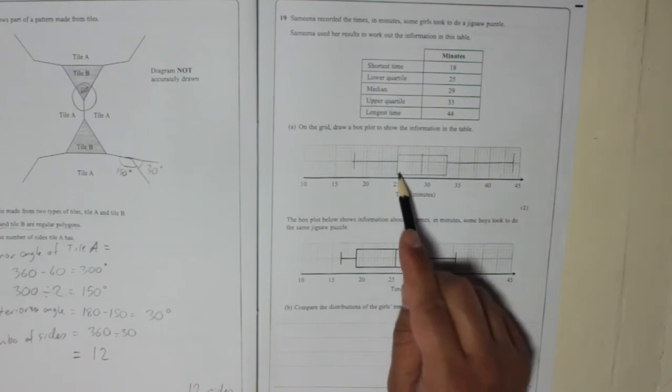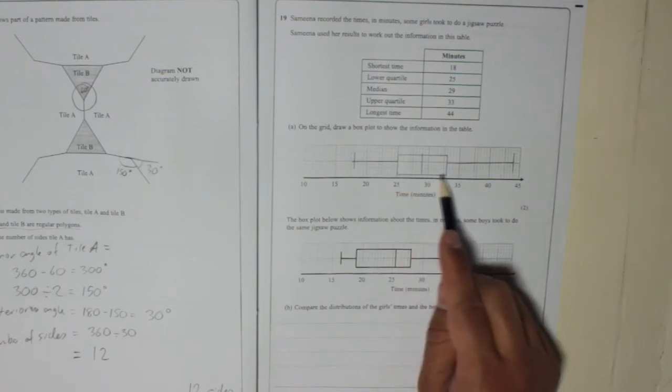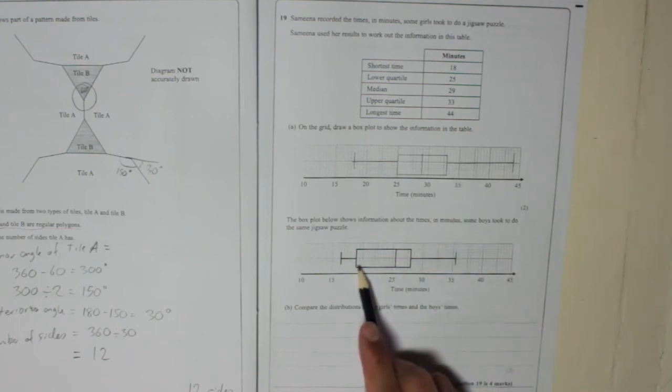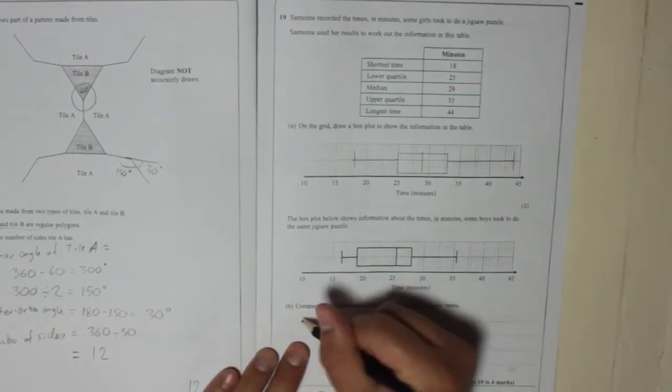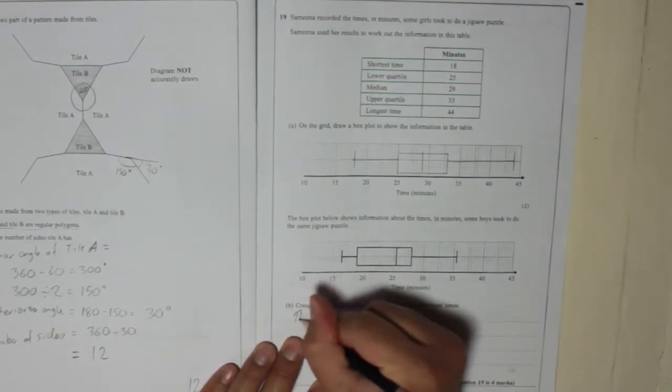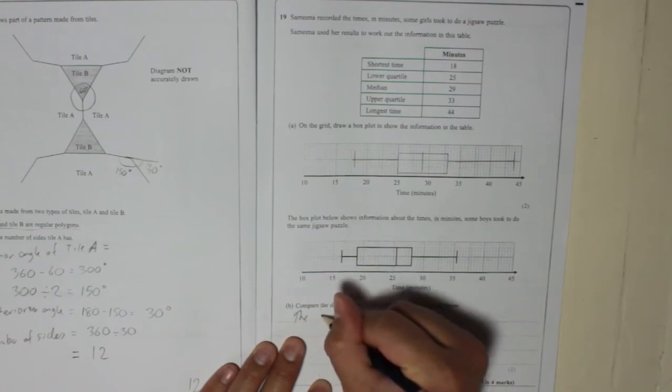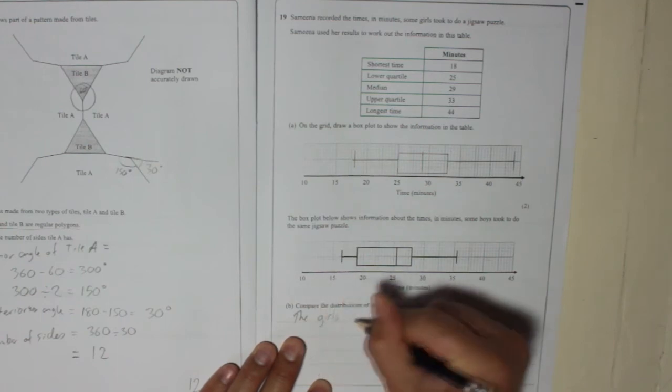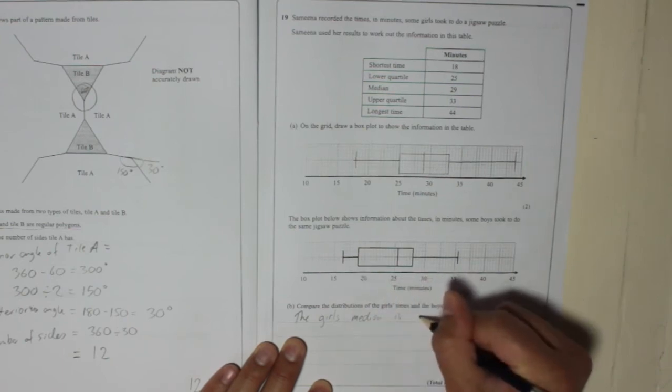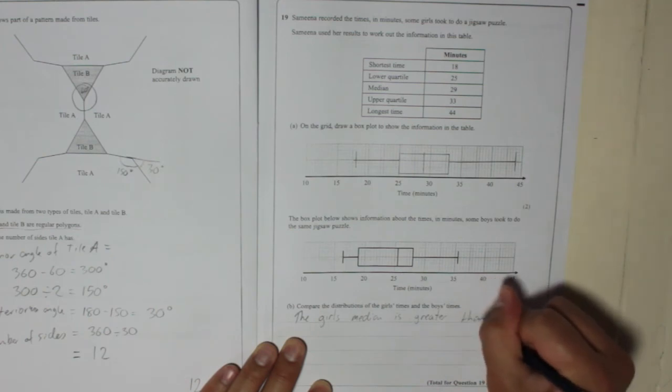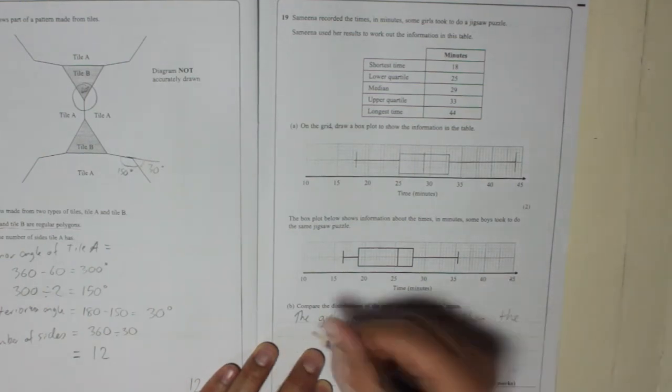However, the girls' interquartile range is a bit smaller than the boys'. So I'm going to say that the girls' median is greater than the boys' median.